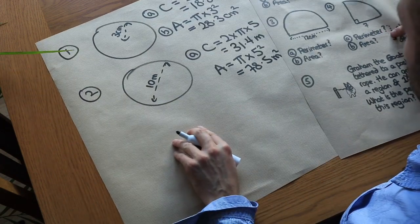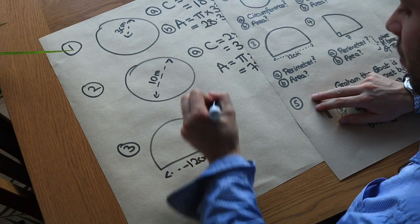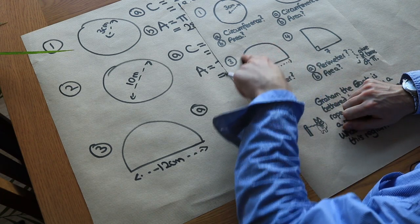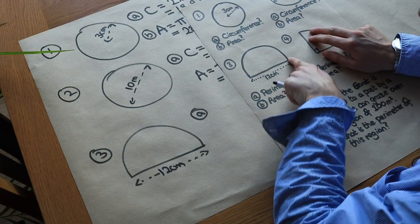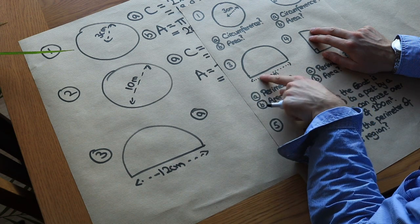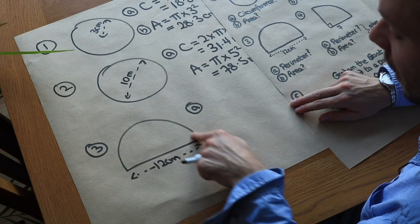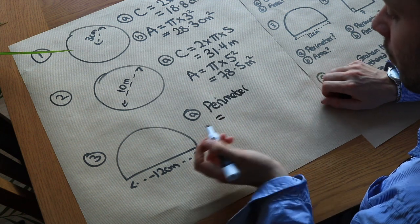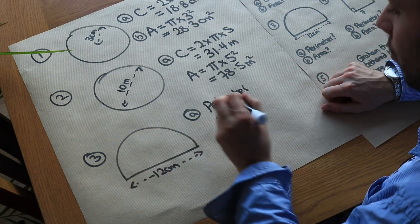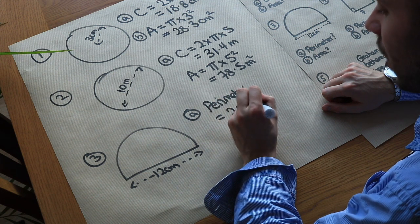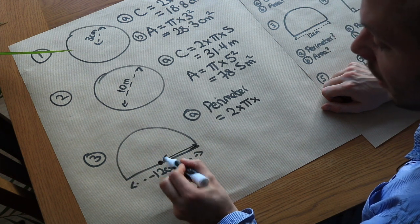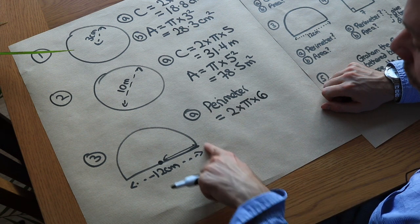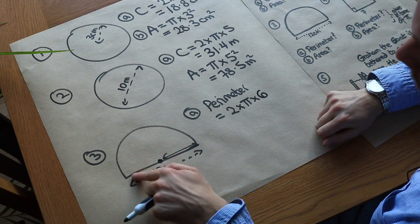This third problem is more difficult because we've got a semicircle — half a circle. We want to find the perimeter. Notice I said perimeter rather than circumference, because the circumference refers to a full circle and we also need to include the straight edge at the bottom. So we need to find the length of the curved edge first. That's half a circle: using 2πr for a full circle, where the radius is half of 12, which is 6, we get 2 times π times 6.